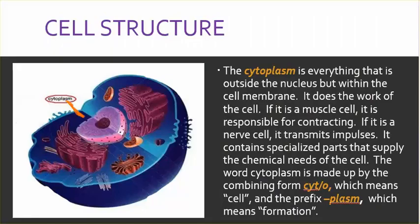Cell structure. The cytoplasm is everything that is outside the nucleus but within the cell membrane. It does the work of the cell — if it is a muscle cell, it is responsible for contracting; if it is a nerve cell, it transmits impulses. It contains specialized parts that supply the chemical needs of a cell. The word cytoplasm is made up of the combining form cyto, which means cell, and the prefix plasm, which means formation.